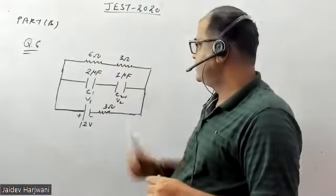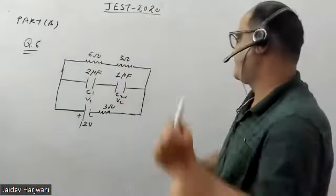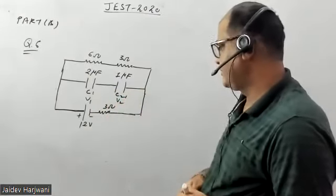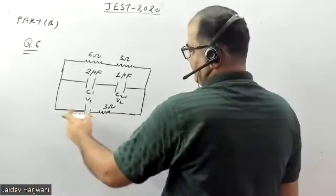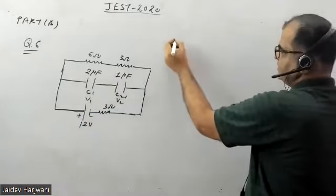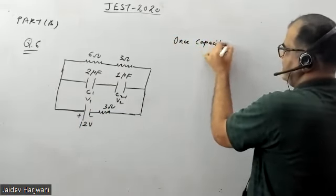The resistances 6 and 3 ohm are also in series. Now they're asking how much charge is stored in each capacitor. Let us say once these capacitors become fully charged.